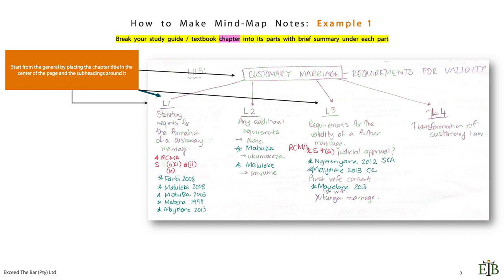So there were four subheadings. One was the statutory requirements for the formation of a customary marriage. Note how she just abbreviates requirements. You should do the same because it's going to save you space on your paper when you draw your mind map. Learning unit two additional requirements, learning unit three requirements for the validity of a further marriage, and the fourth lesson transformation of customary law.